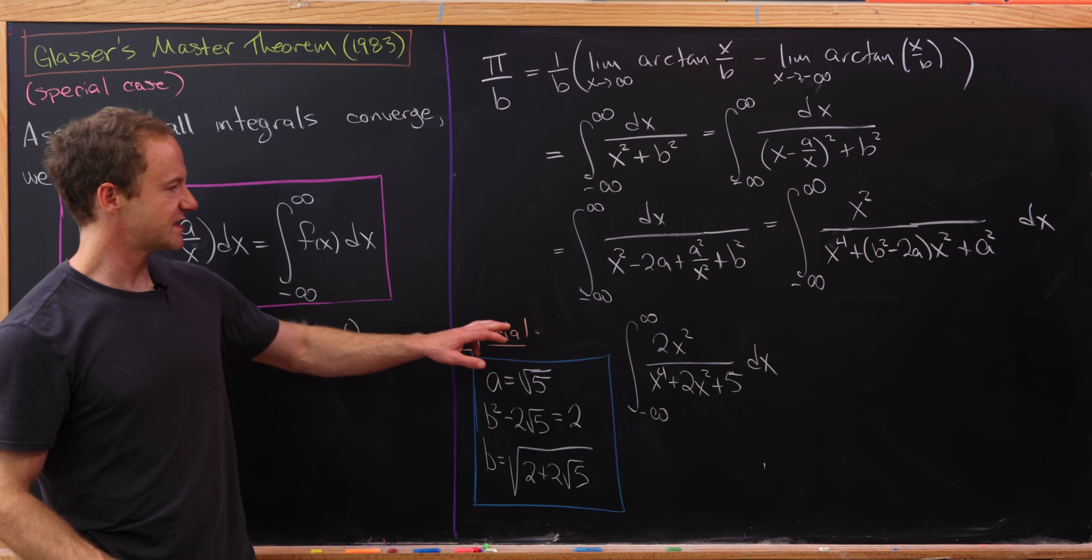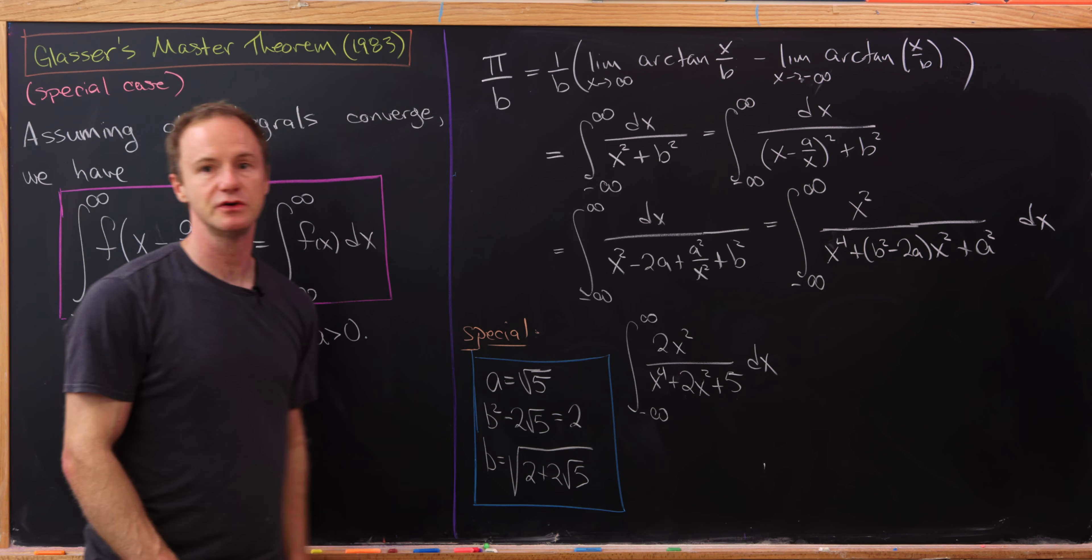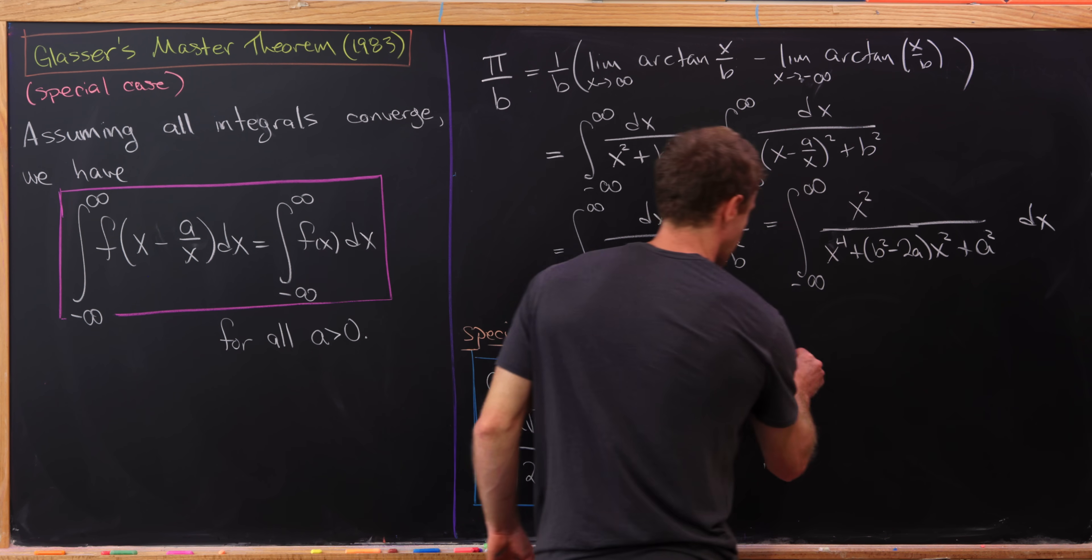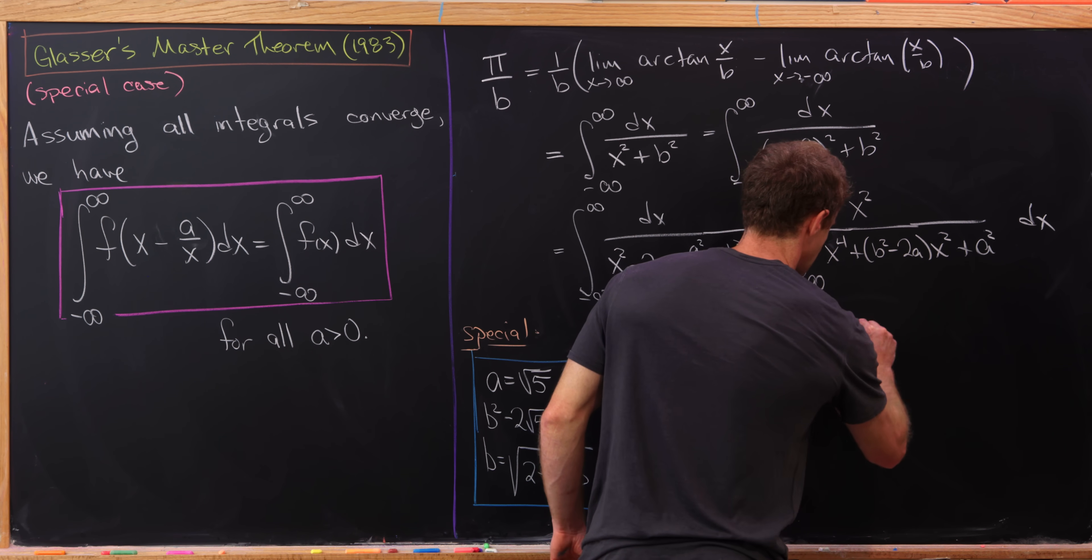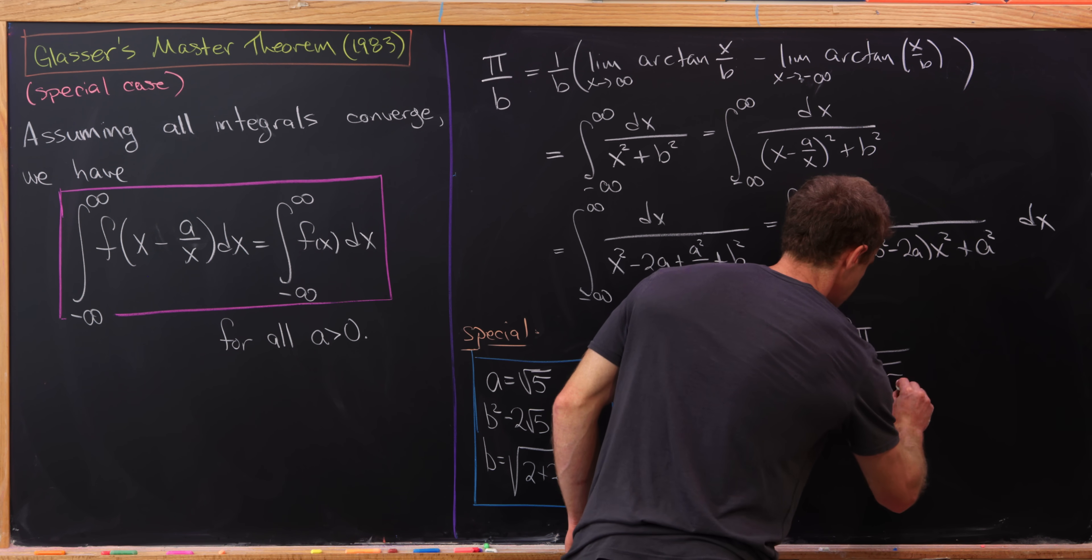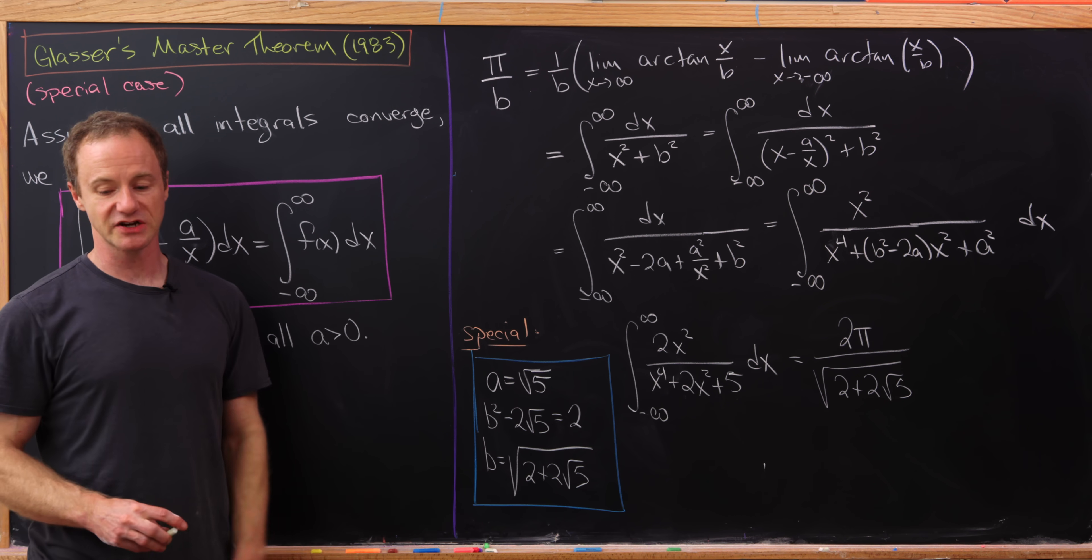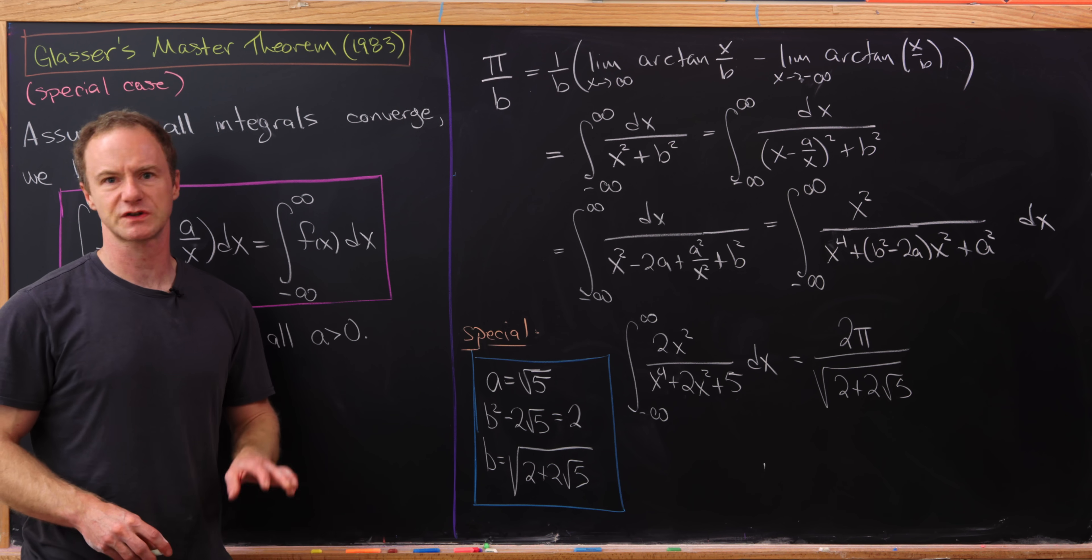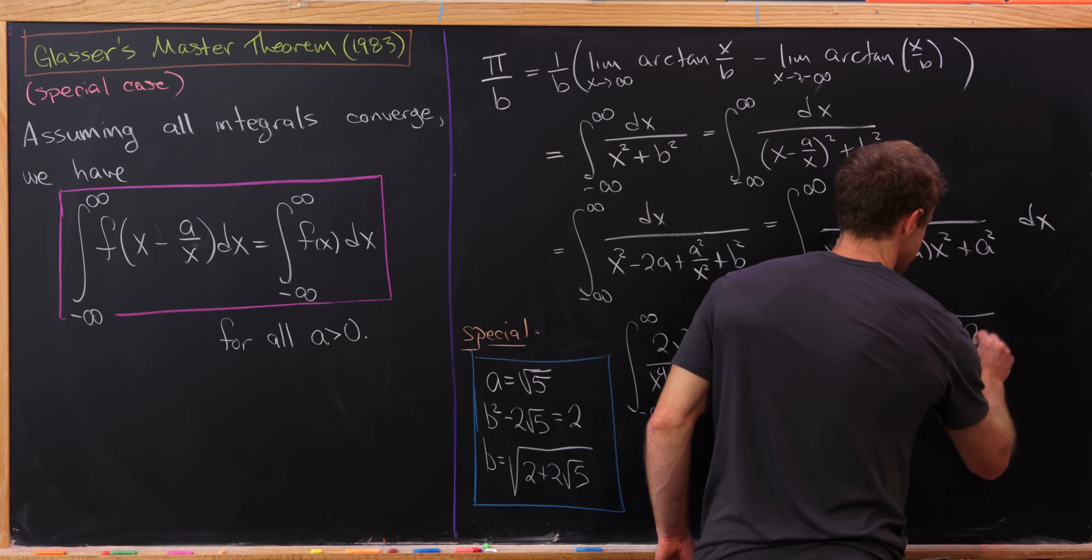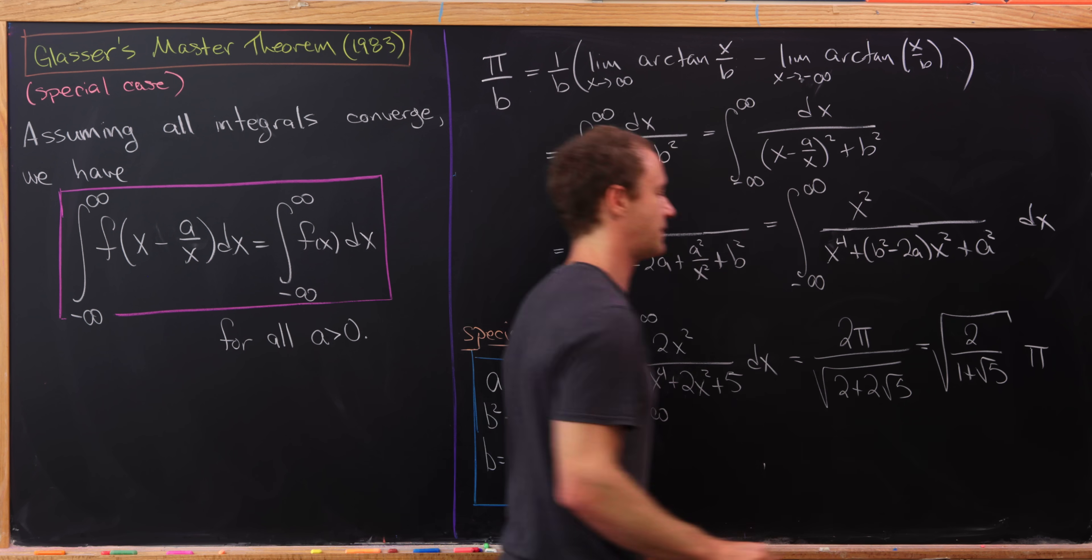But note that this integral, it's not going to be pi over b because we've got this 2 here. But it'll be 2 pi over this value of b. So, in other words, it's going to be 2 times pi over the square root of 2 plus 2 root 5. And then it seemed kind of interesting, but we can actually simplify it a little bit more so it looks even better. After a bit of simplification, this is the same thing as the square root of 2 over 1 plus root 5 all times pi.